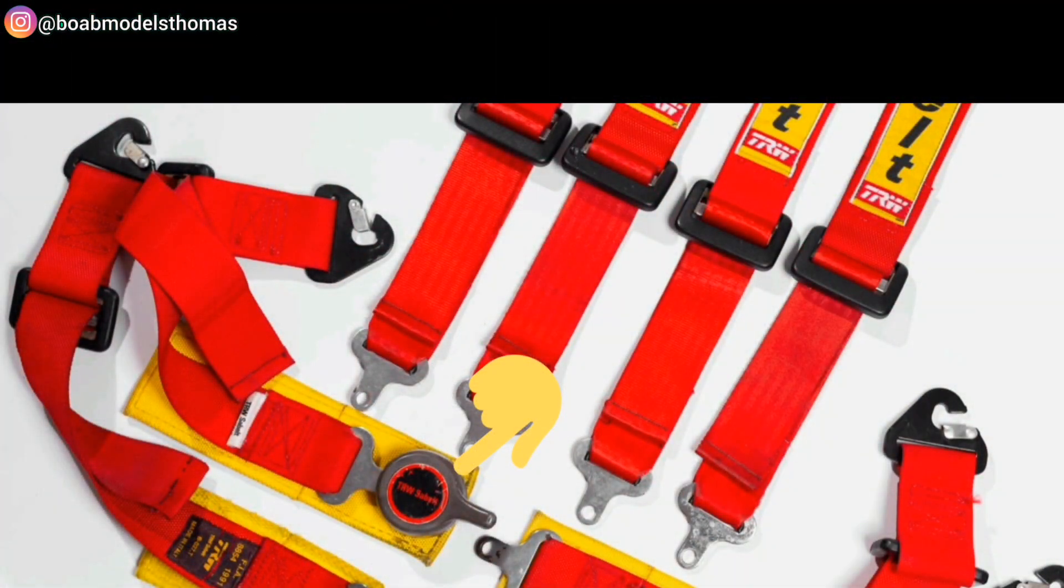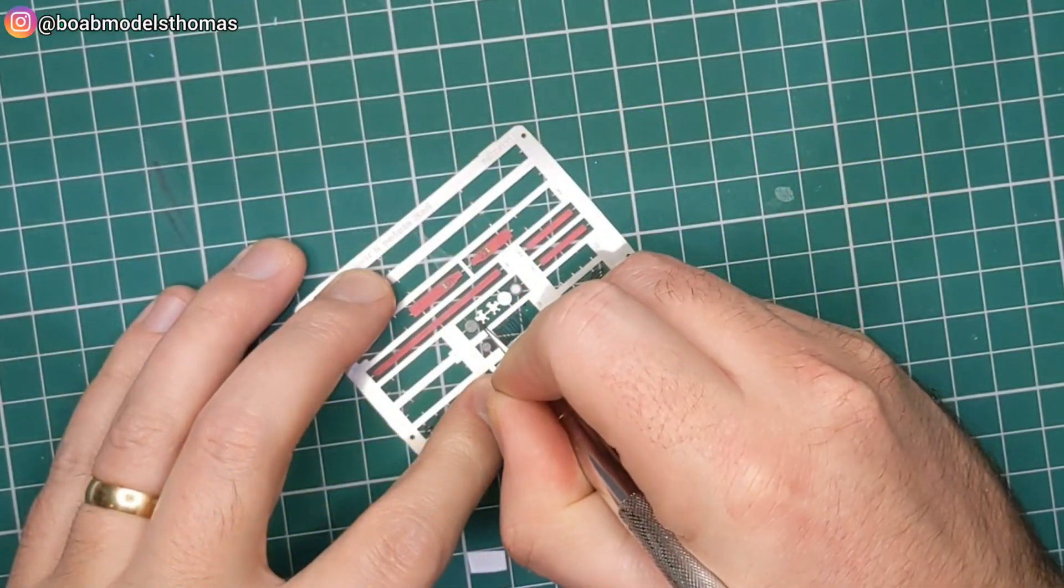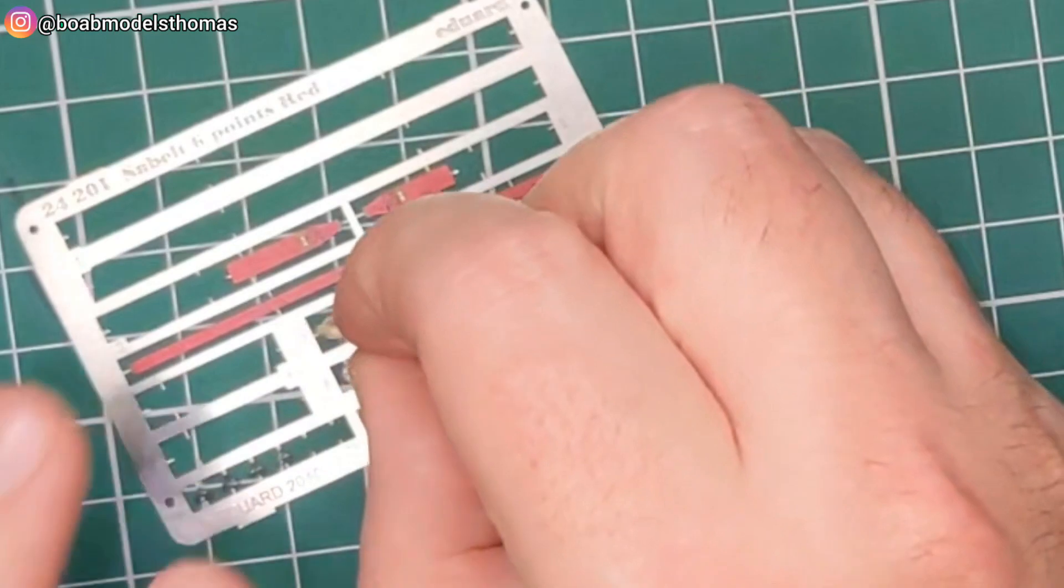So then you've got the waist belt and also this little clip here which goes in the middle. This is made up of six parts.